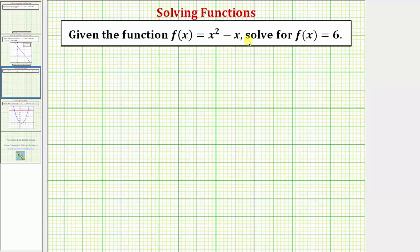We're given the function f of x equals x squared minus x, and we're asked to solve for f of x equals six, which means you want to find the x values or inputs that give a function value or output of positive six.